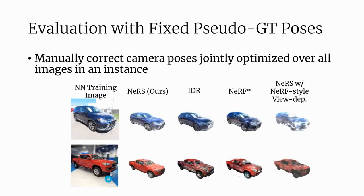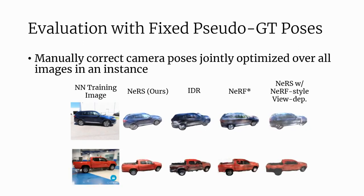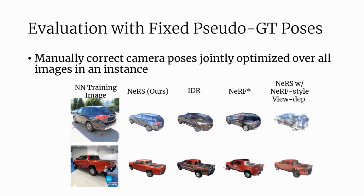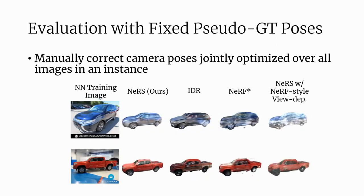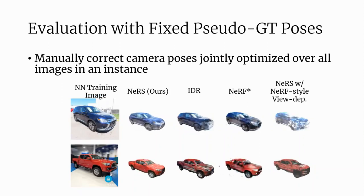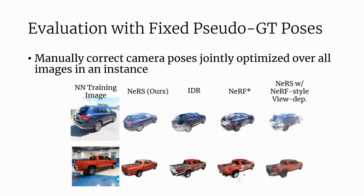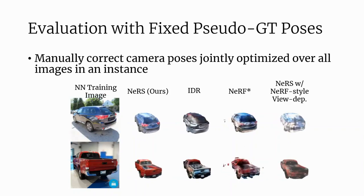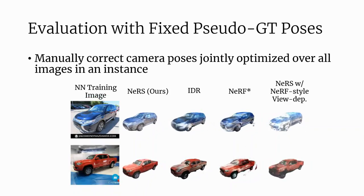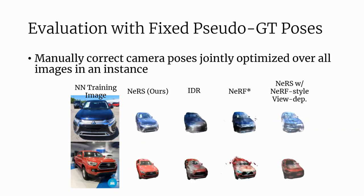Here, we compare our approach with IDR, which extracts a surface from an SDF representation. We also train NeRF with the mask loss and other adjustments to be more competitive given few views. Finally, we show our approach with the radiance directly conditioned on position and view direction, as done in NeRF. We find that our surface-based representation generalizes much better across unseen viewpoints.